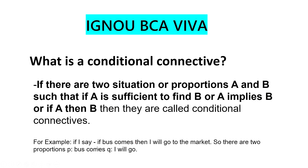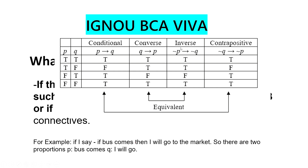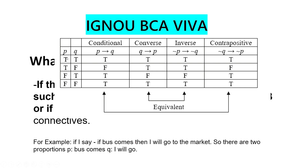For example: 'if bus comes, then I will go to the market.' I will explain this with a truth table. If bus comes and I go to the market, it is true. If bus comes and I do not go to the market, it is false. If bus does not come and I go to the market, it is true. If bus does not come and I do not go to the market, it is true — because there was no obligation when the bus did not come.